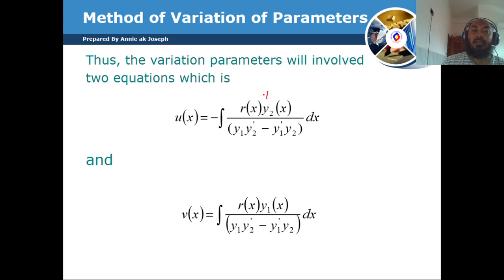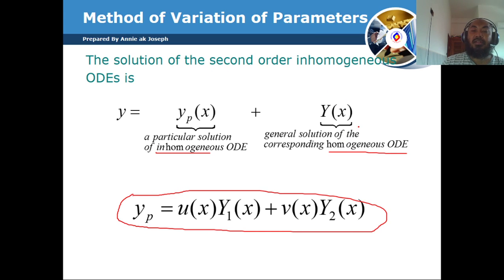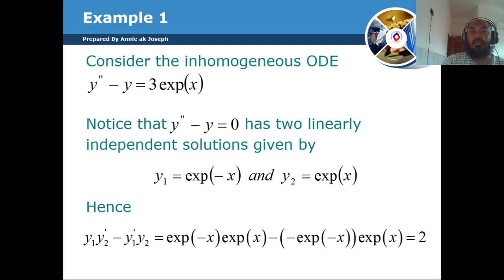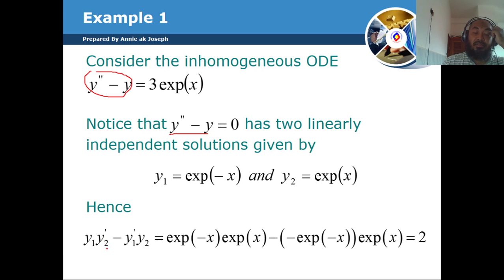We need to find Y1 and Y2, which come from the general solution of the homogeneous ODE. In the example, we find the general solution of the homogeneous ODE to get Y1 and Y2, then compute the Wronskian: Y1·Y2' minus Y1'·Y2.